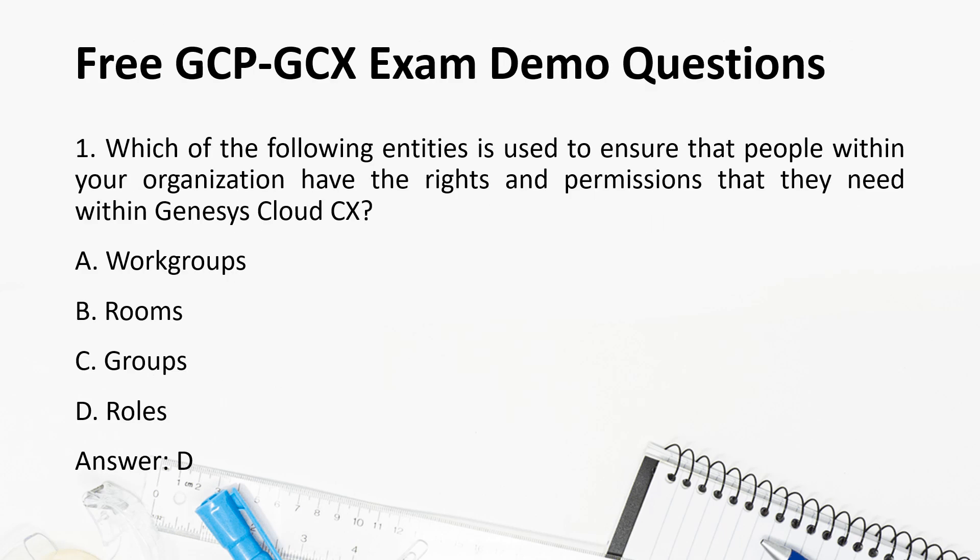Question 1: Which of the following entities is used to ensure that people within your organization have the rights and permissions that they need within Genesis Cloud CX? a. Work groups, b. Rooms, c. Groups, d. Roles. Answer: d. Roles.